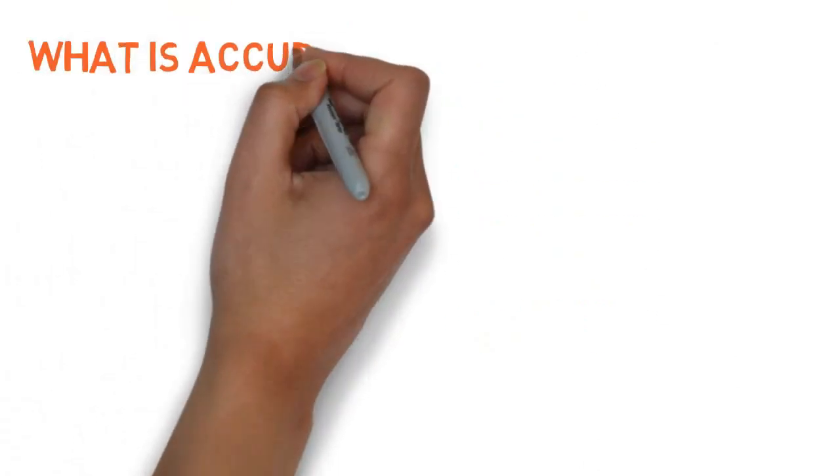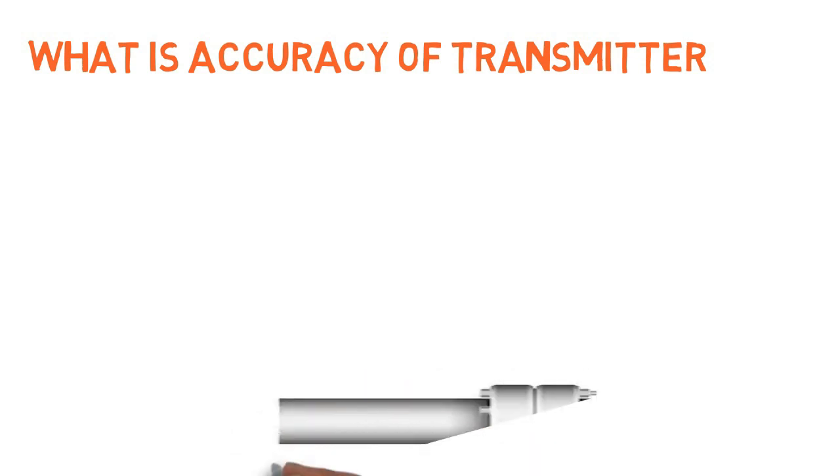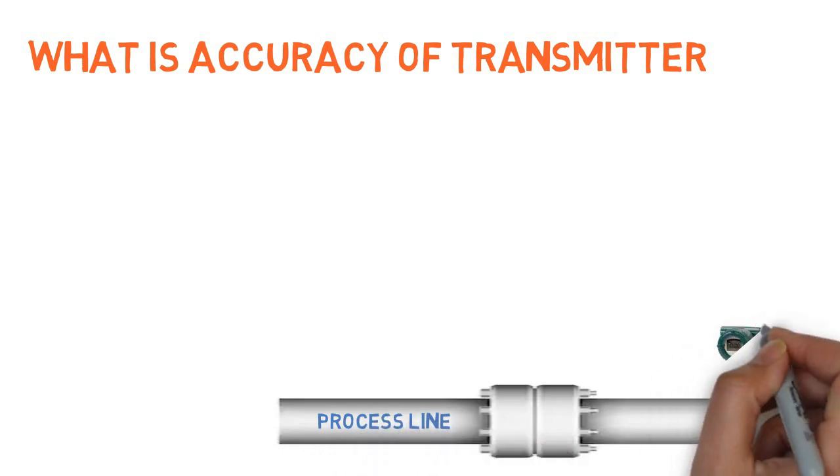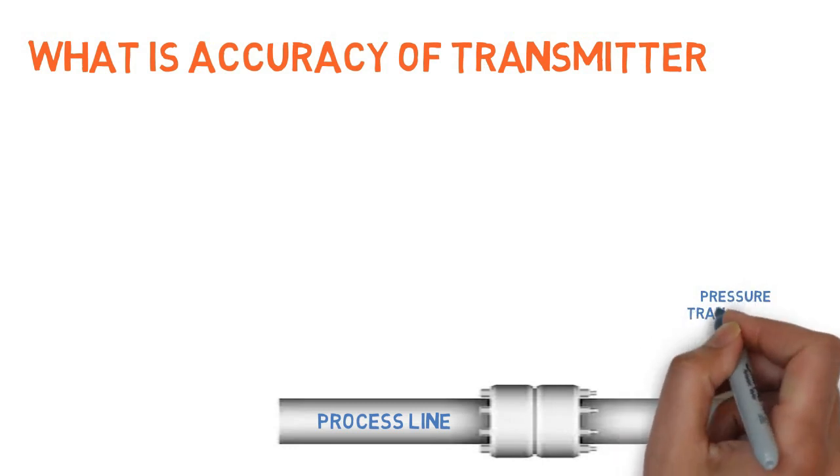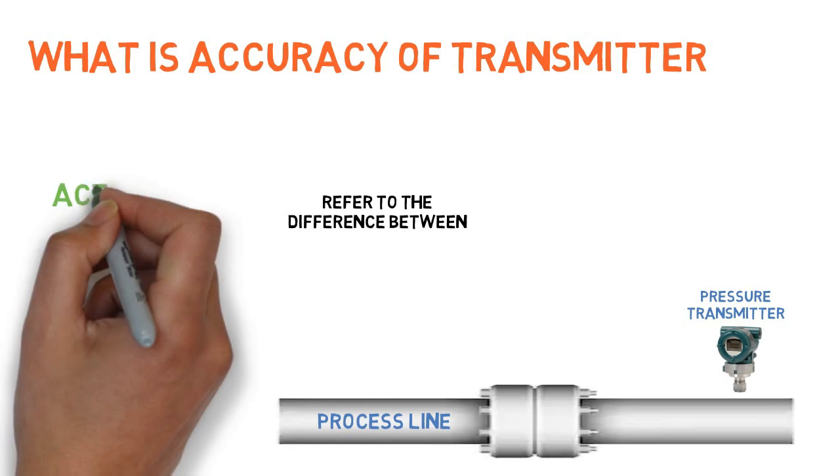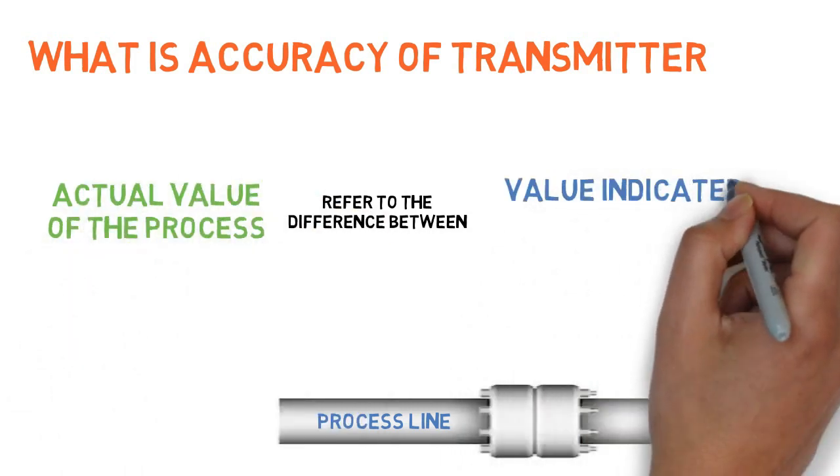What is accuracy of a transmitter? Accuracy refers to the difference between the actual value of the process and the value that is indicated by the transmitter.